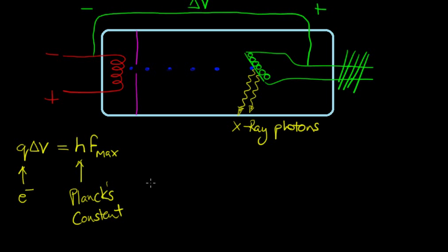Frequency is the frequency of the photon. Rearranging this, we get charge of the electron multiplied by the potential difference divided by Planck's constant.